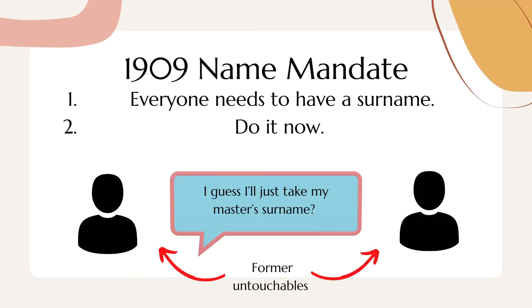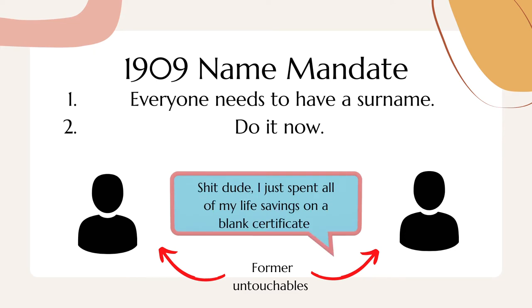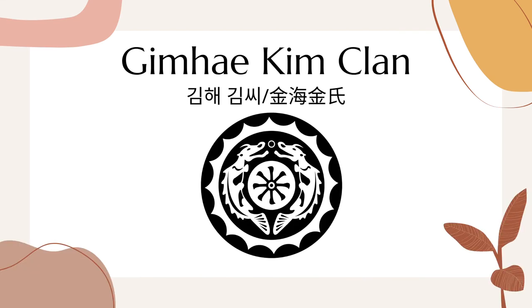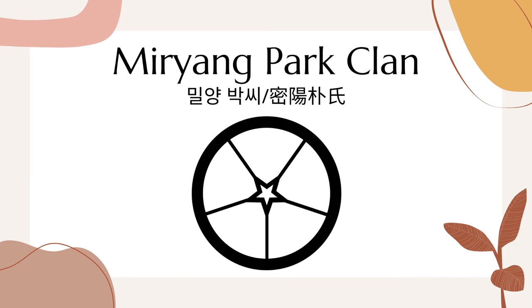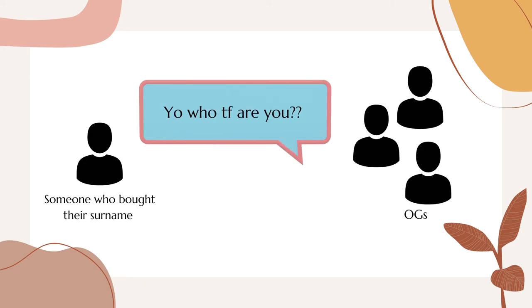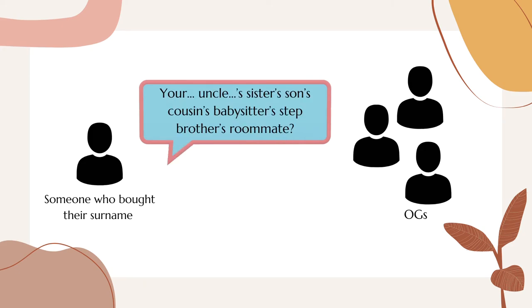And to top it off, the remaining minority — likely the untouchables who could not afford to buy a certificate — joined the Yangban ranks in 1909 under Japanese rule, where every Korean citizen was forced to take on a surname. During this time, people in the untouchable caste usually took on surnames of their master families. Some of the popular Yangban clans to join were the Gimhae Kim clan, the Jeonju Lee clan, and the Miryang Park clan. They were chosen because of their large numbers and their hierarchical caliber at the time. The large numbers were important, as the smaller the clan was, the easier it was for an individual who bought their way in to become distinguished.